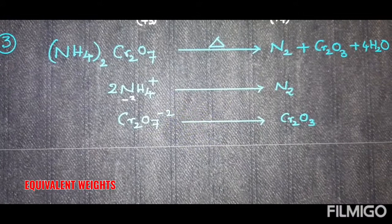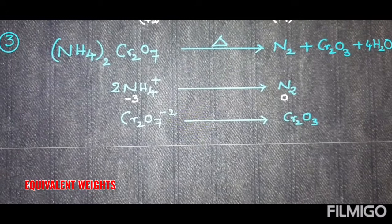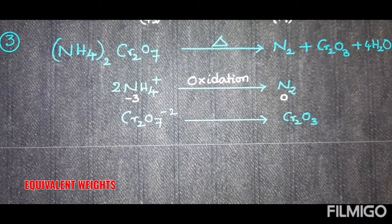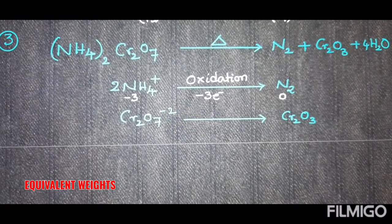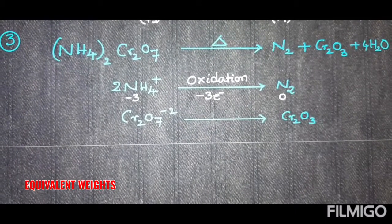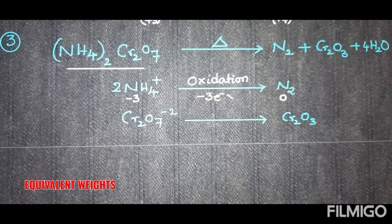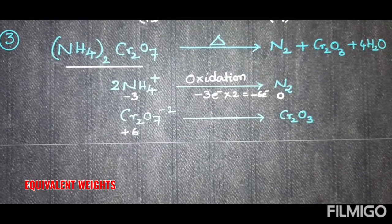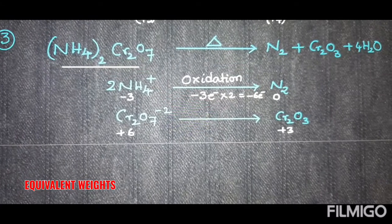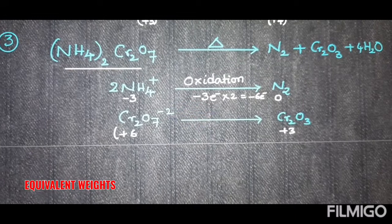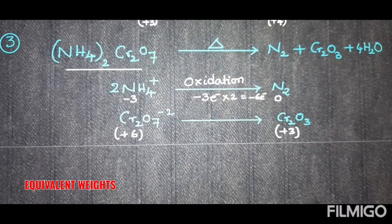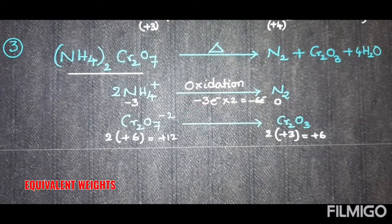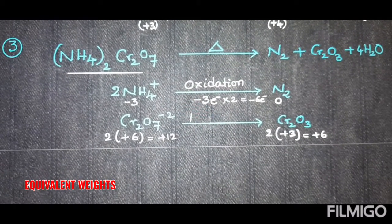2NH₄⁺ is converted into N₂, and Cr₂O₇²⁻ is converted into Cr₂O₃. In NH₄⁺ the oxidation state of nitrogen is −3; in N₂ it is 0. A change from −3 to 0 is an increase, so this is oxidation — three electrons are released per nitrogen atom. Since the molecule contains two nitrogen atoms, six electrons are released from the nitrogen part.